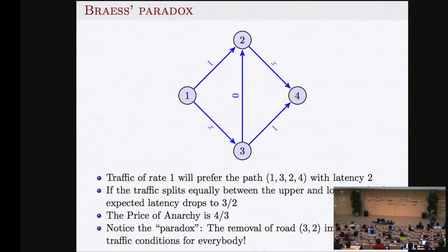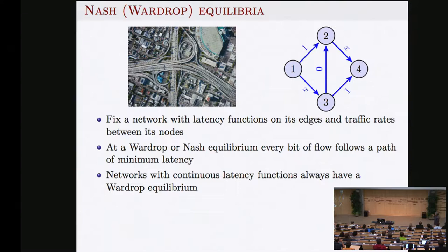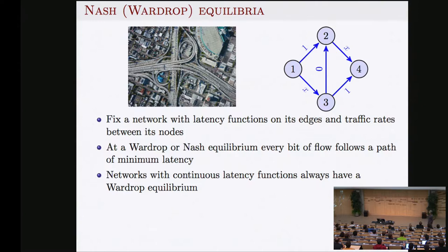The general problem: a congestion game consists of a network and players that flow through it. In practice we have 10,000 or 100,000 drivers — we can take the limit and imagine a flow of infinitely many players, each following the optimal path for herself. When they find a solution, it's called either Wardrop equilibrium or, in game theory, Nash equilibrium. If the latency functions are continuous, there is always such an equilibrium — this is the analog of Nash's theorem for congestion games.